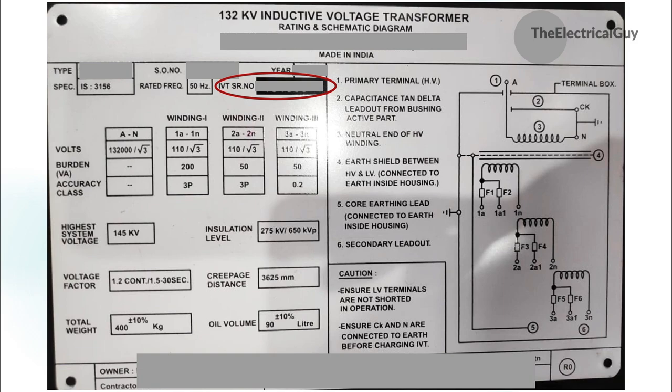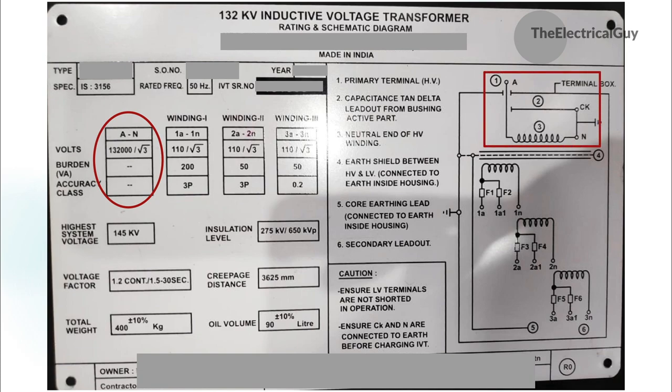Next we have the winding details of the IVT. The first column tells us about the primary side of the transformer. The first row in the first column tells us about the connection — if you look at the schematic diagram you will find letters A and N, where A is the primary connection. In the second row it says volts, mentioned as 132kV divided by root 3. Voltage transformers are connected phase to earth and hence the voltage is divided by root 3. Burden and accuracy class are not applicable for the primary winding.